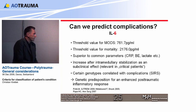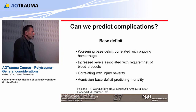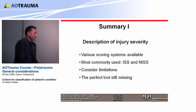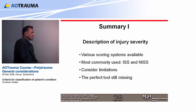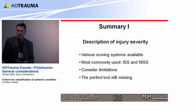Another interesting observation is that certain genotypes are correlated with the development of complications. Lactate and base deficit are not very specific or good parameters for predicting complications. In summary: description of injury severity remains difficult and vague. Various systems are available — most commonly ISS and the new ISS — but there are significant limitations and the perfect tool is still missing. Promising are new parameters like interleukins, which have advantages over lactate, base excess, and CRP. We should not forget clinical findings, and in the future we should consider genetic variability.